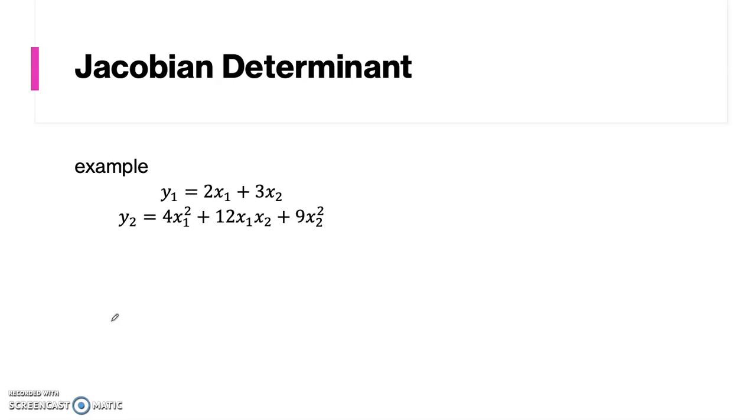Let's take an example here. The first function y1 is equal to 2x1 plus 3x2. y2 is 4x1 square plus 12x1x2 and 9x2 square.